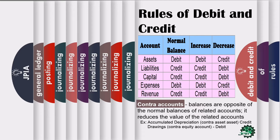Contra accounts. This type of accounts have the opposite balances of the normal balance of related accounts, and it reduces the value of the related accounts. For example, drawings or withdrawals is a contra-equity account. Because this account is included in owner's equity and owner's equity's normal balance is credit, the drawings — which has a debit normal balance — contradicts the normal balance of its related account. In effect, it reduces the value of owner's equity.